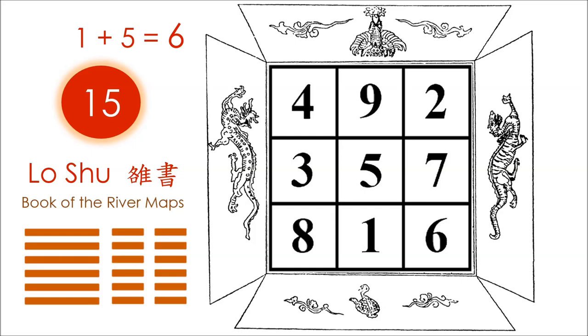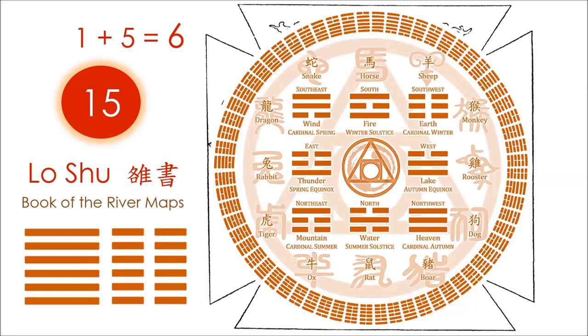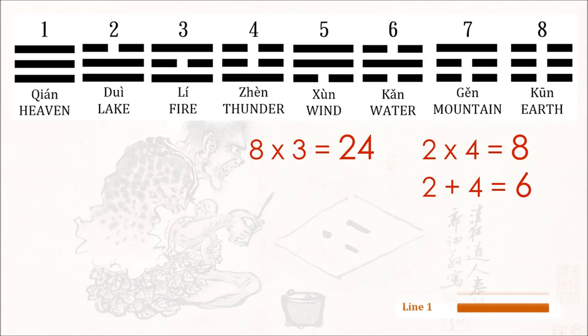In a passage from the Book of Documents, Shang Shu, the Duke of Zhou asks his brother Ji Shi, where do numbers come from? Ji Shi replies that numbers come from the circle and the square — the square pertains to earth, and the circle pertains to heaven. As for the eight trigrams: eight times three is twenty-four, which returns back to eight when you multiply two and four, while the Theosophical sum of two plus four is six, signifying the hexagram.